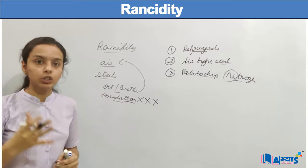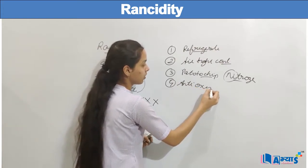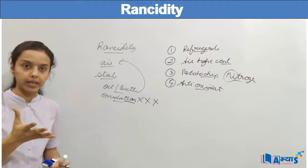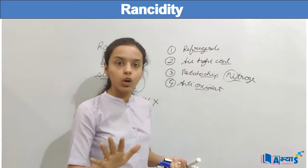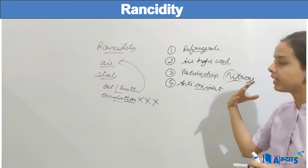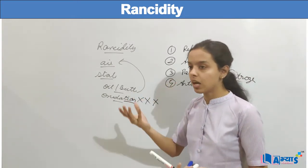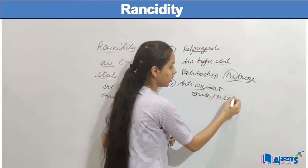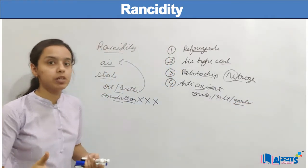The last step we can use to prevent rancidity is to use antioxidants. Antioxidants are those substances or food items which may be added to food to reduce oxidation. That means they will not allow oxidation to take place even though the food is exposed to air — even if we leave the food open in the air, they will not allow oxidation to take place. Some examples of antioxidants include onion, salt, and garlic.